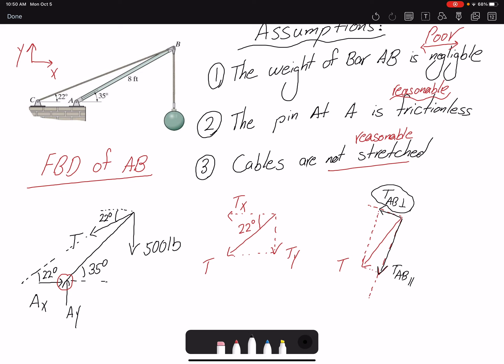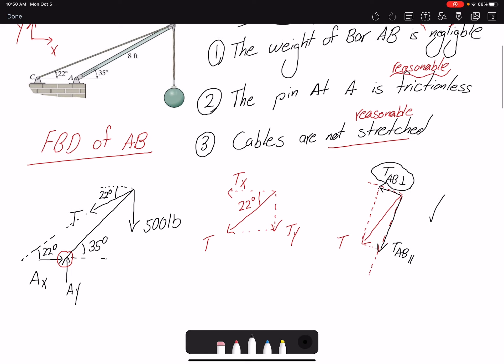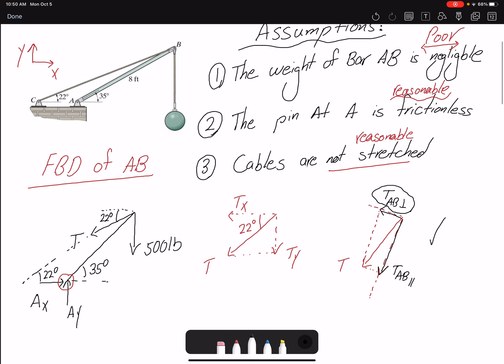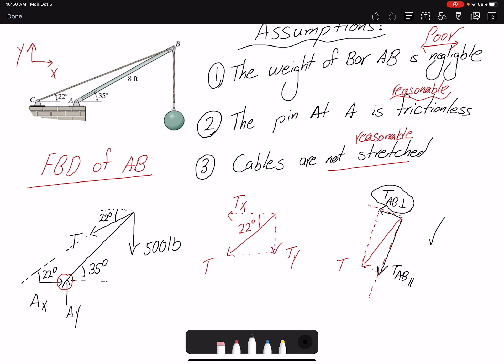So sometimes it's easier to decompose it along the member rather than in x and y. So in practice you're going to go with this decomposition here. But one thing that we need to find is this angle. So if this is 35, 22, the difference would be 13. So this angle would be 13 degrees. And here because this is 22 and total is 35, so that would be 13 degrees.